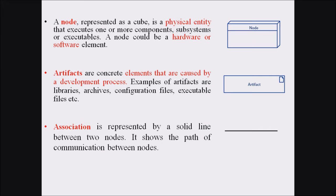These are the major symbols associated with a deployment diagram. The general symbols also include a circle used to represent an interface, and components are represented with a component symbol — a rectangle with a tab.